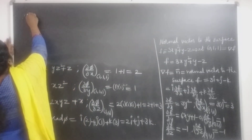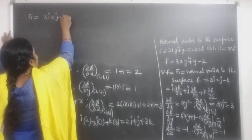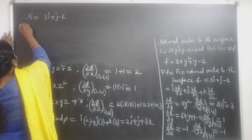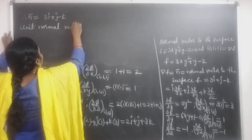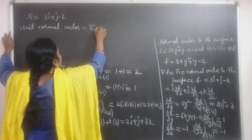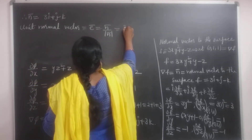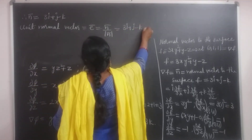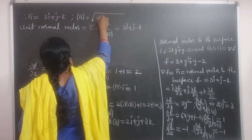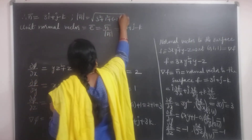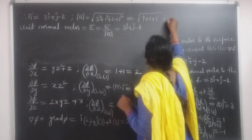Therefore the normal vector n̄ = ∇f = 3i + j − k. The unit normal vector ē = n̄ / |n̄|. Find |n̄| = √(3² + 1² + (−1)²) = √(9 + 1 + 1) = √11.